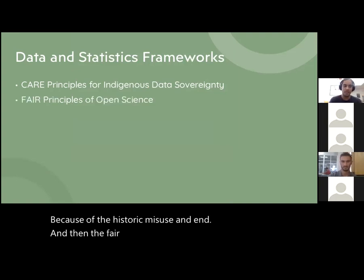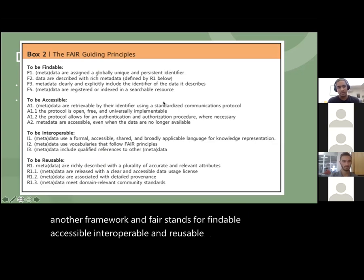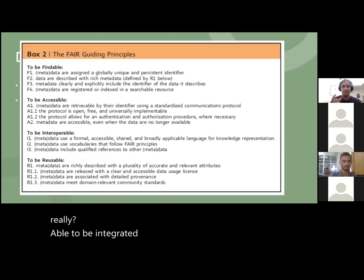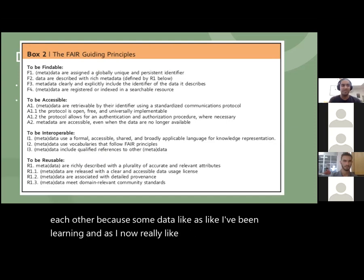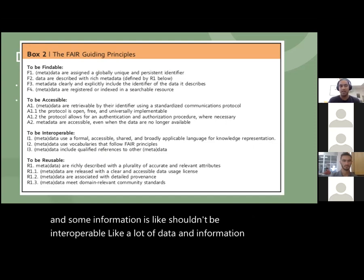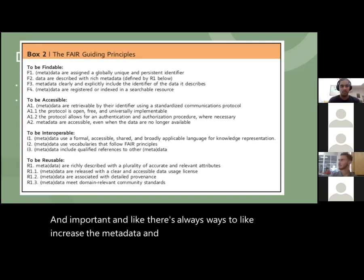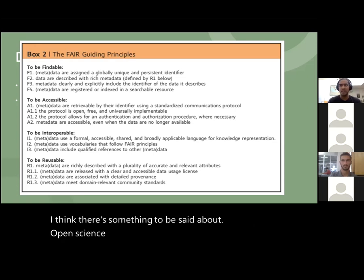The FAIR principles of open science stand for Findable, Accessible, Interoperable, and Reusable — really about how we make data able to be integrated and used broadly. Sometimes the CARE and FAIR principles contradict each other, because some data should not be accessible to everybody. A lot of data is site-specific and actually can't be compared to another site or aggregated without losing what makes that data relevant and important. There's something to be said about open science and universality — which isn't really true or realistic in my opinion.